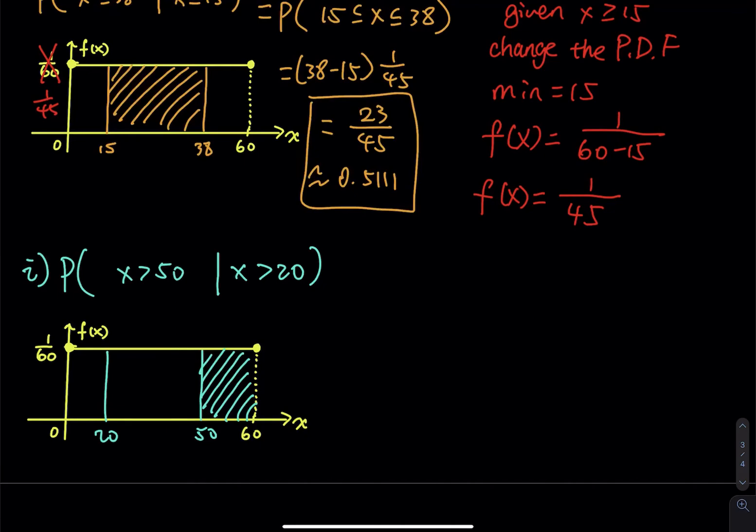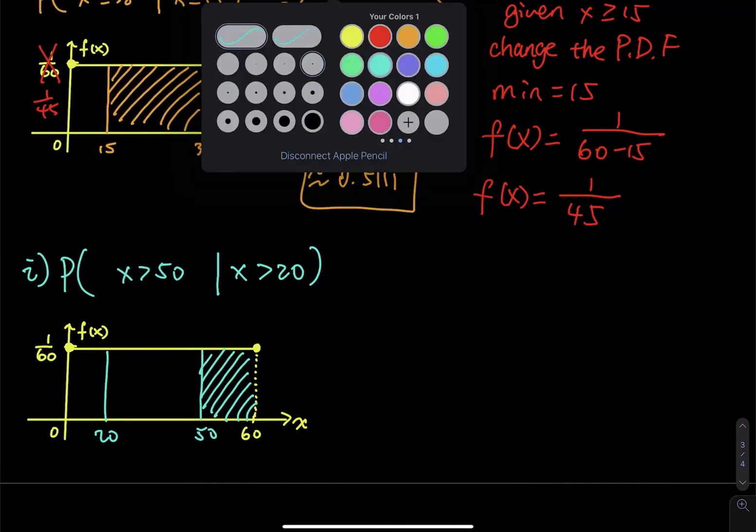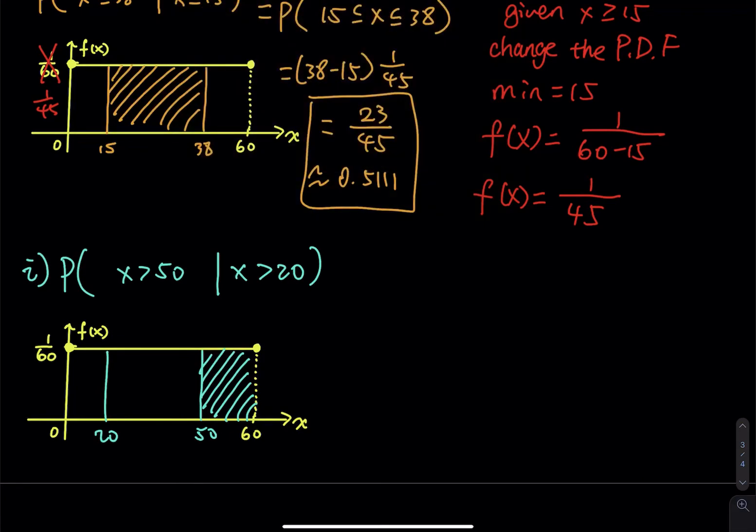So we don't need to shade any area between the 20 and 50. But the thing is, how do you change the PDF? Tell me, how? How do you change the PDF? So since the given is 20, so this is how, when you change the PDF, you change the minimum based on the given, all right? So based on the given.